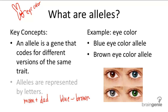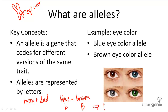Alleles are also represented by letters. So blue eyes may be little b and brown eyes may be big B. That means your genetic makeup is big B, little b. Remember, alleles are the specific gene that codes for different versions of the same trait.